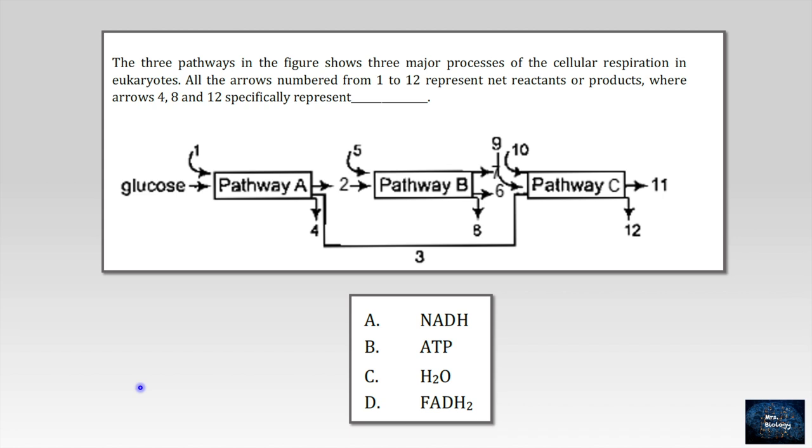The three pathways in the figure show the three major processes of cellular respiration in eukaryotes. All the arrows from 1 to 12 represent net reactants or products, where arrows 4, 8 and 12 specifically represent a product. Let's look at the choices.